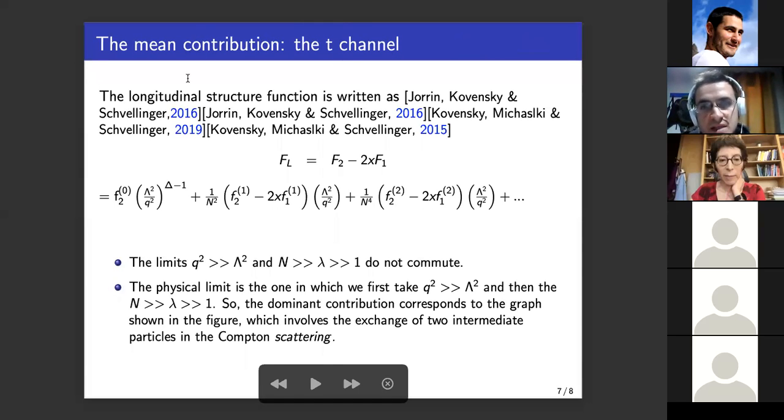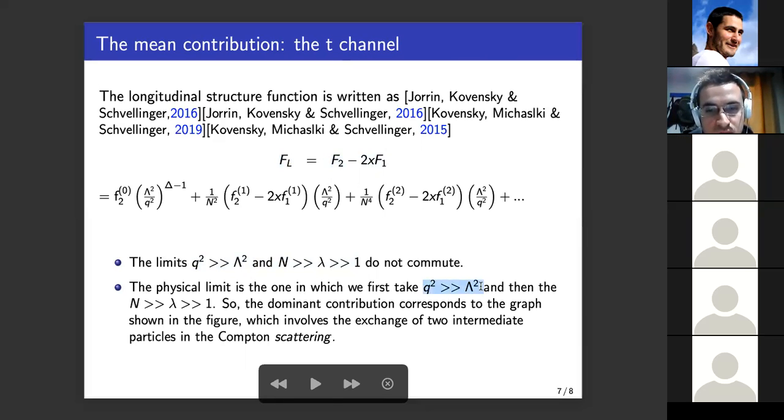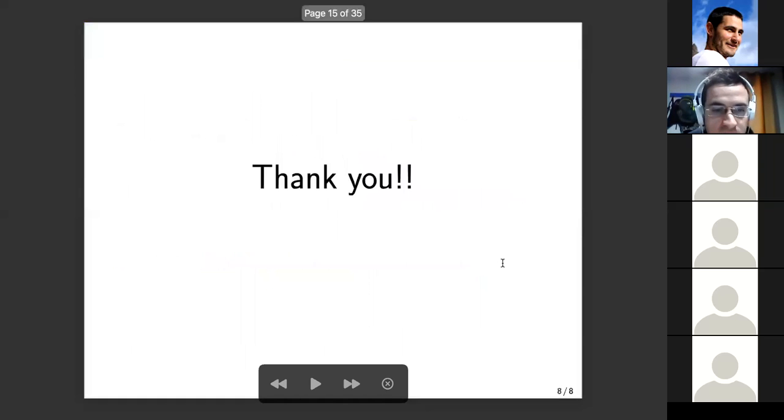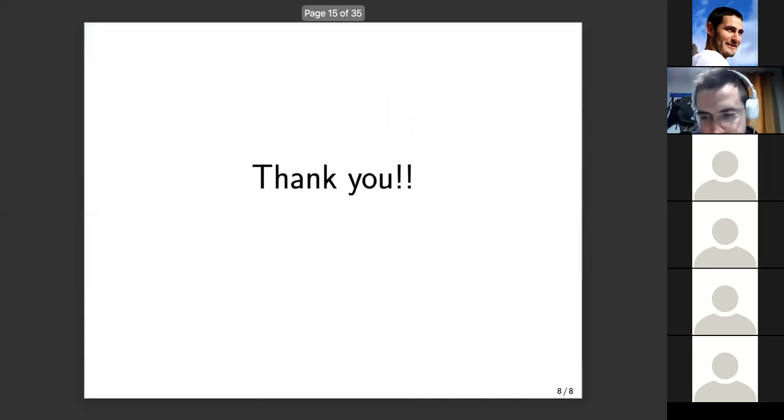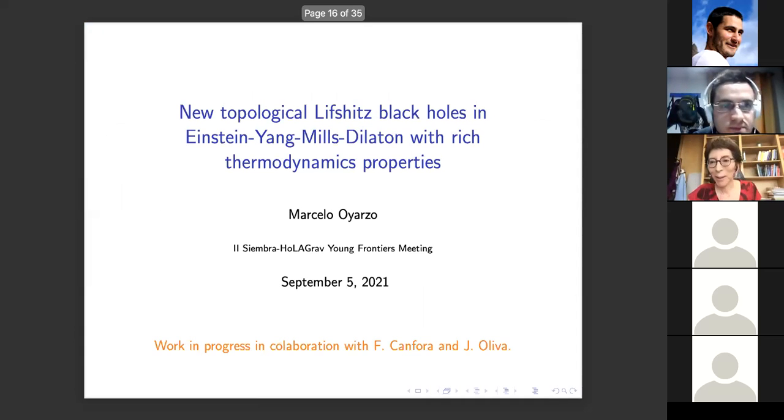Okay, next. Okay, the longitudinal structure function is written by this, and in supergravity the longitudinal structure function is given by this. We know the limit Q squared much larger than lambda squared and N much larger than lambda and lambda much larger than one do not commute. So the physical limit is one in which we first take Q squared much larger than lambda squared and then this limit. So the dominant contribution should correspond to the graph shown in the figure, which involves the exchange of two intermediate particles in Compton scattering. Thanks.